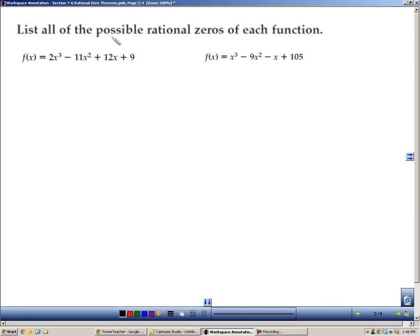So in this problem, we have to list all the possible zeros, or all the possible solutions. Now we're going to use this idea of P over Q. The P has to be a factor of the last term, in this case the 9. So what are the factors of 9? Well, they're 1 and negative 1, because you've got to use positive and negative. They're 3 and negative 3.